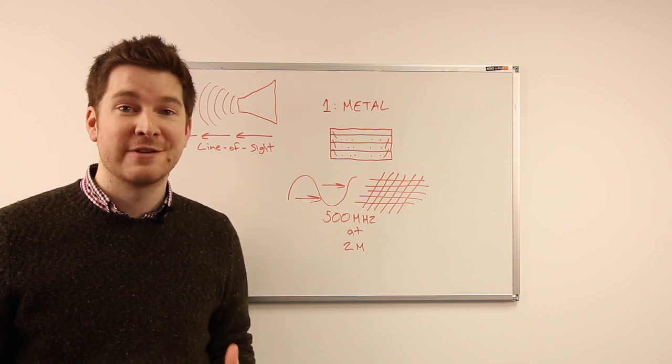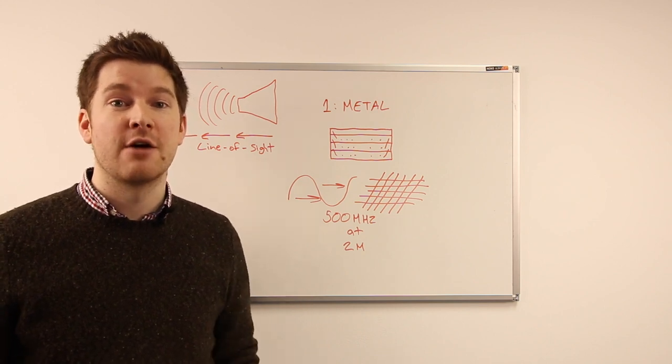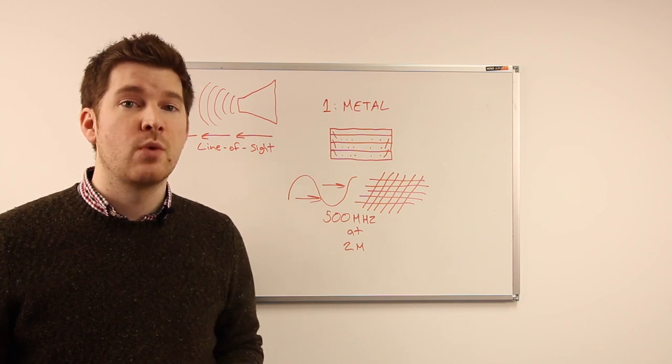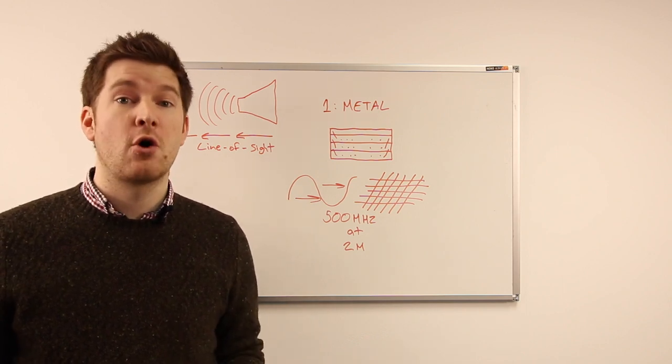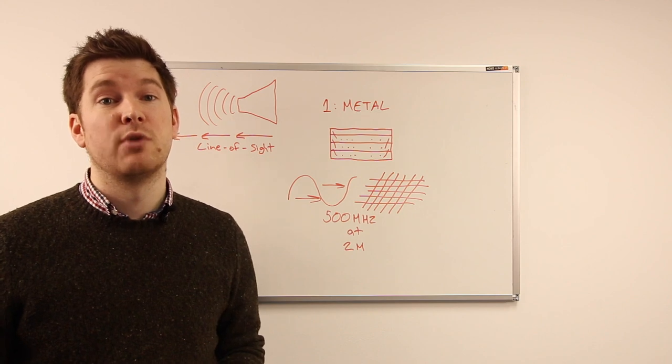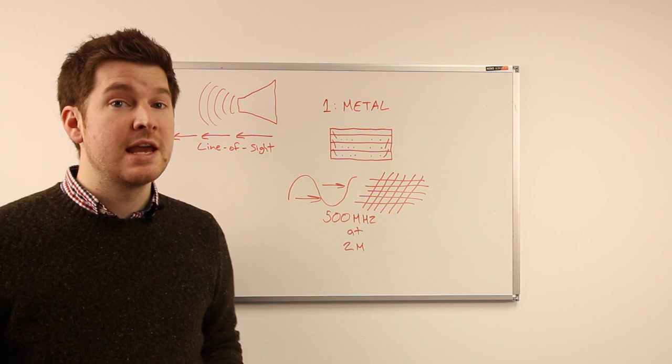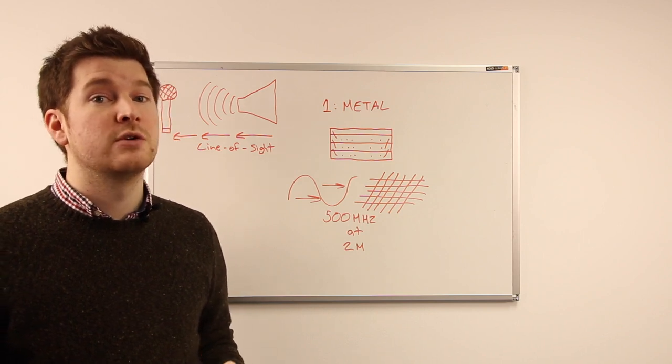The issue we have there is that because metal attenuates RF, blocks it, or reflects it, we end up with a situation where those receivers cannot operate as effectively because you're blocking the antennas from actually receiving that RF signal. So really what you want to do is you don't want to enclose those inside of a rack.